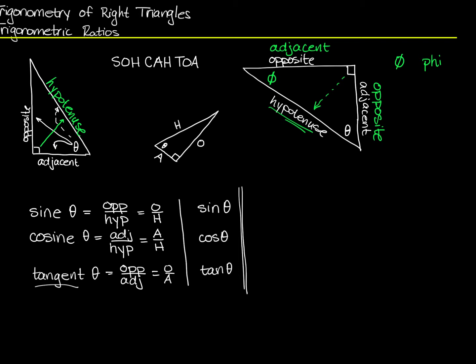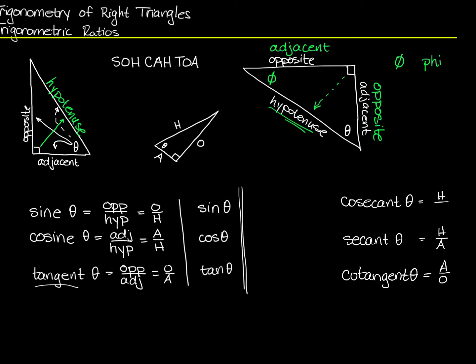Now I'm going to look at the other three trigonometric ratios, but I'm going to do them a different way than most people introduce them — I'm going to give my list upside down. These other three ratios are the cotangent of theta, which is adjacent over opposite; the secant of theta, which is hypotenuse over adjacent; and the cosecant of theta, which is hypotenuse over opposite.